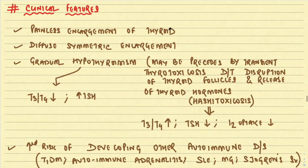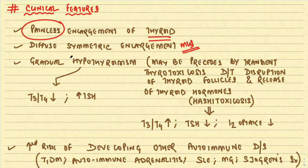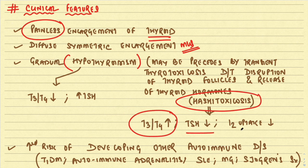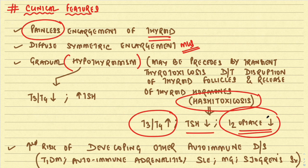Regarding clinical features of Hashimoto's thyroiditis: it presents with painless enlargement of the thyroid — diffuse, symmetric enlargement, an important MCQ point. The patient gradually develops hypothyroidism. However, in some cases there may initially be thyrotoxicosis — Hashitoxicosis — characterized by increased T3/T4, decreased TSH, and decreased radioactive iodine uptake, which differentiates it from Graves' disease where radioiodine uptake is active. Later, hypothyroidism develops with falling T3/T4 and raised TSH.